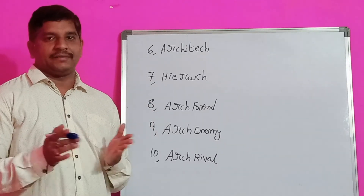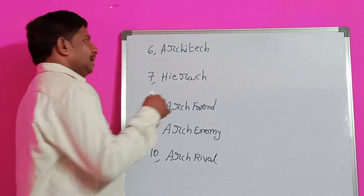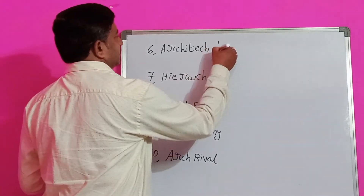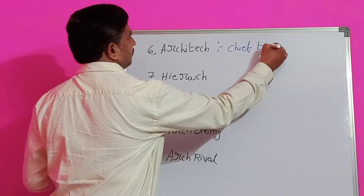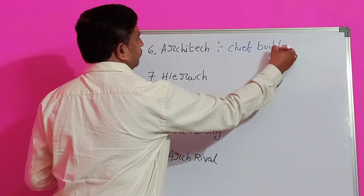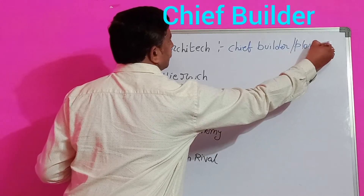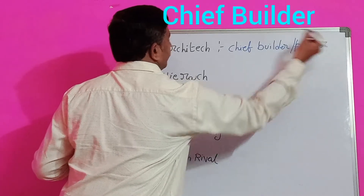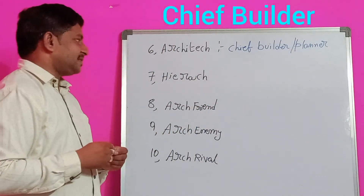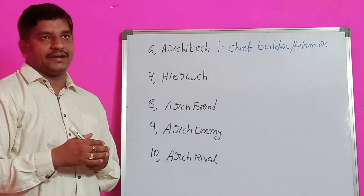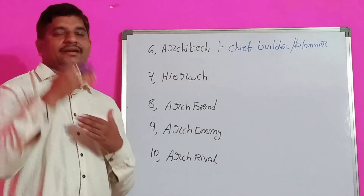Architect. You know very well the architect — the main person who gives the plan for a building. That is called architect. The chief builder and planner is called architect.